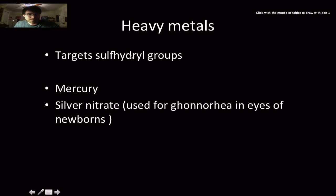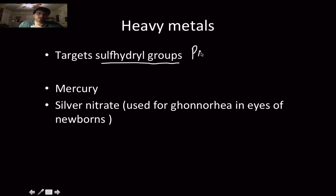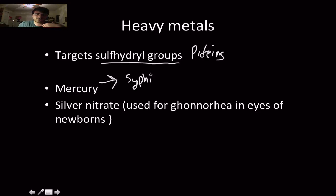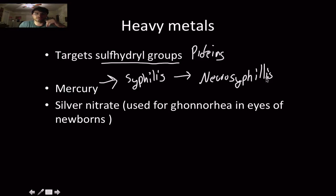Then there are the heavy metals, which target sulfhydryl groups in certain protein molecules. Mercury is an example — it was actually used to treat syphilis. There are many who argue that the neurological symptoms associated with syphilis infections were not caused by the bacterium itself, but by the mercury being administered as treatment back in the 1800s.